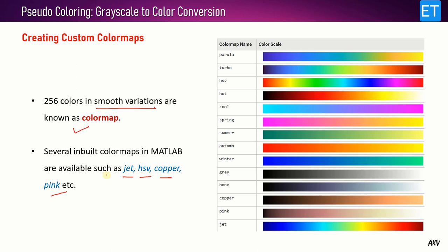A few of the inbuilt MATLAB color maps are shown here: Parula, Turbo, HSV, Hot, Cool, Spring, Summer, Autumn, Winter, Grey, Bone, Copper, Pink, and JET. You can use any of these inbuilt color maps to apply pseudo coloring to your grayscale image.